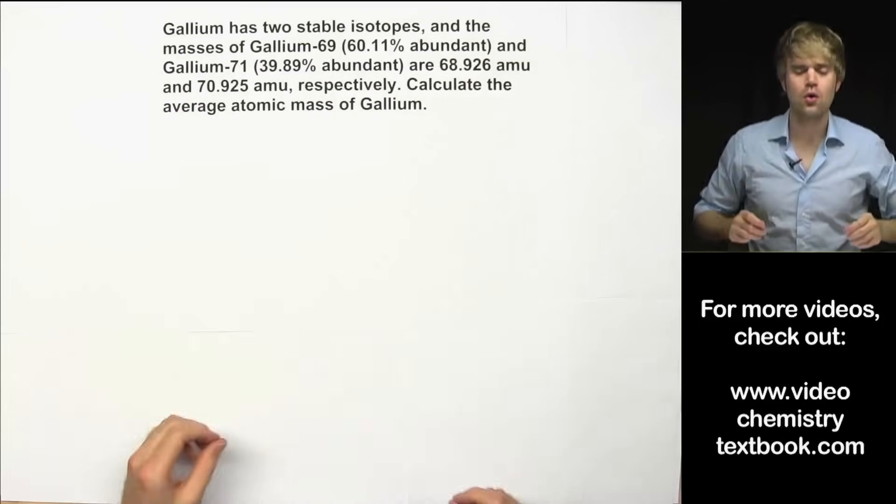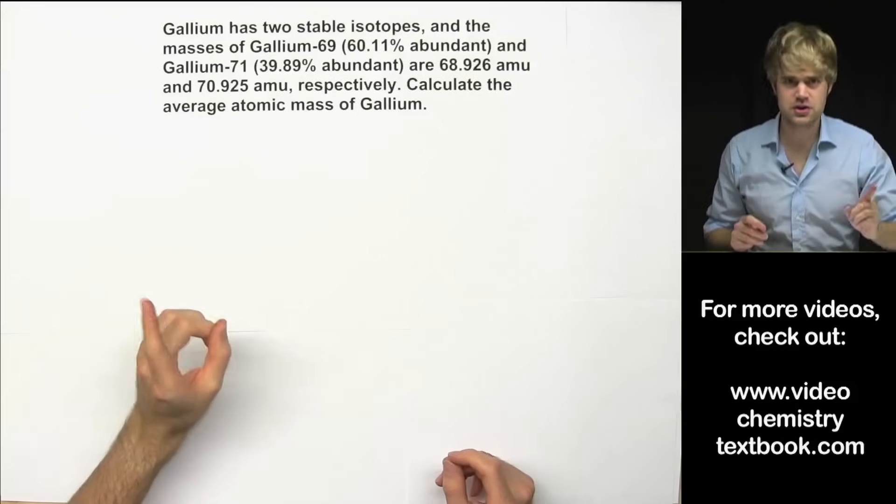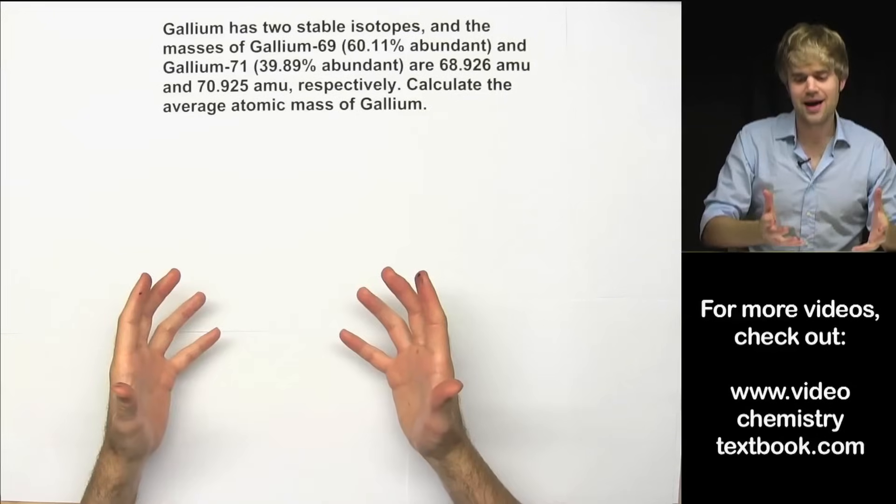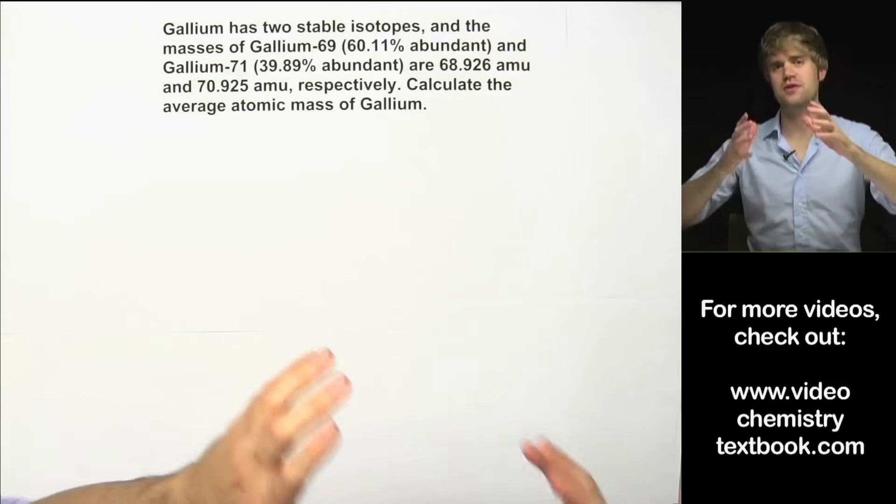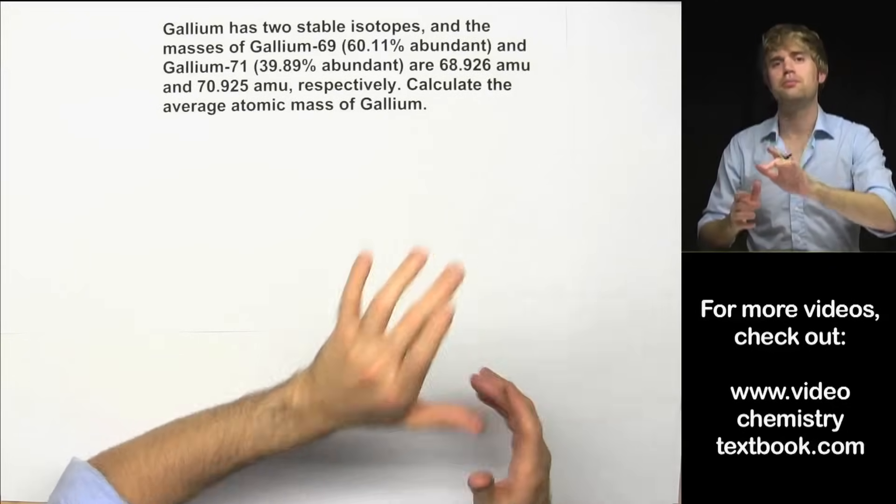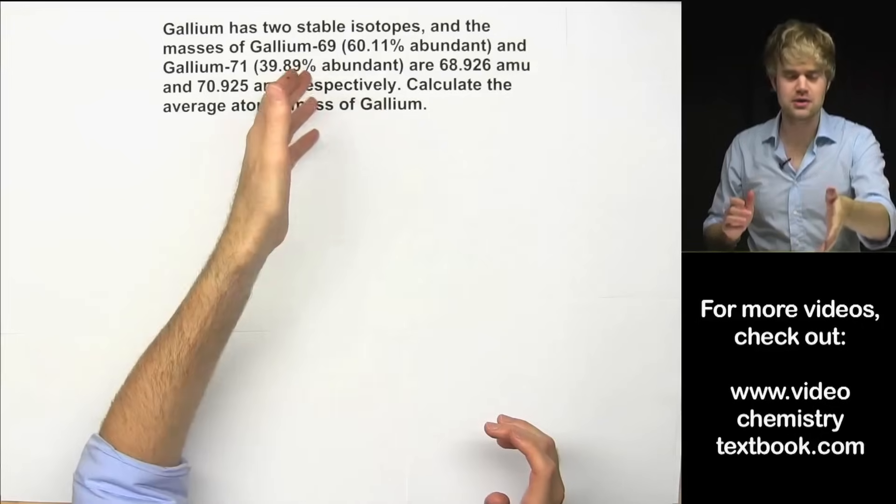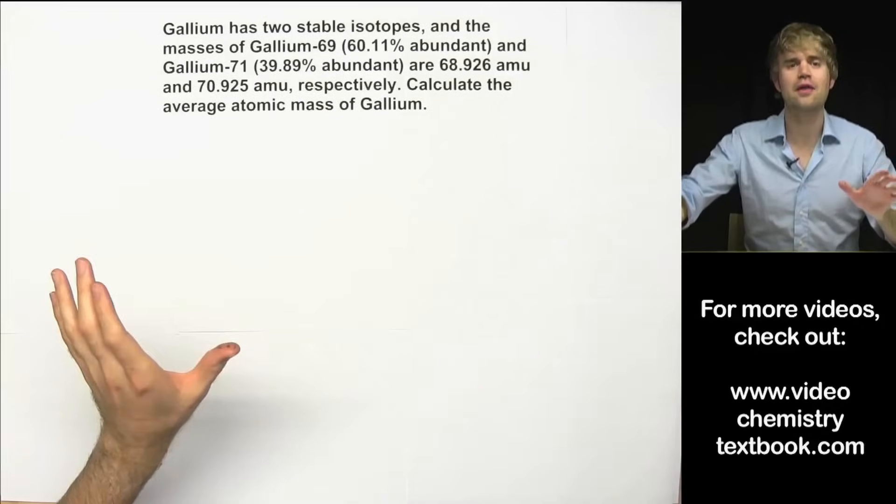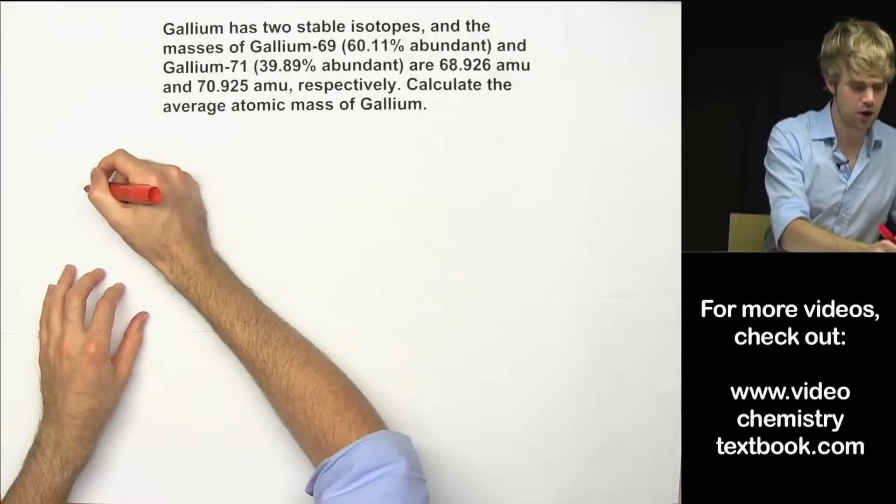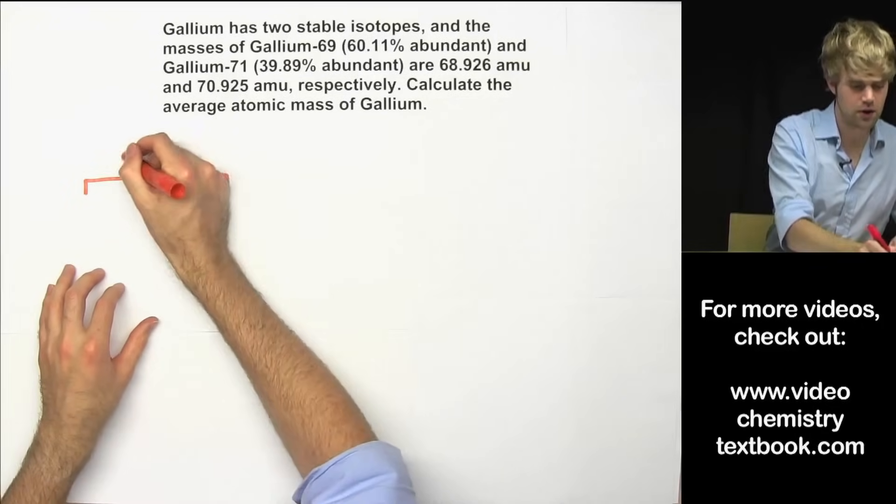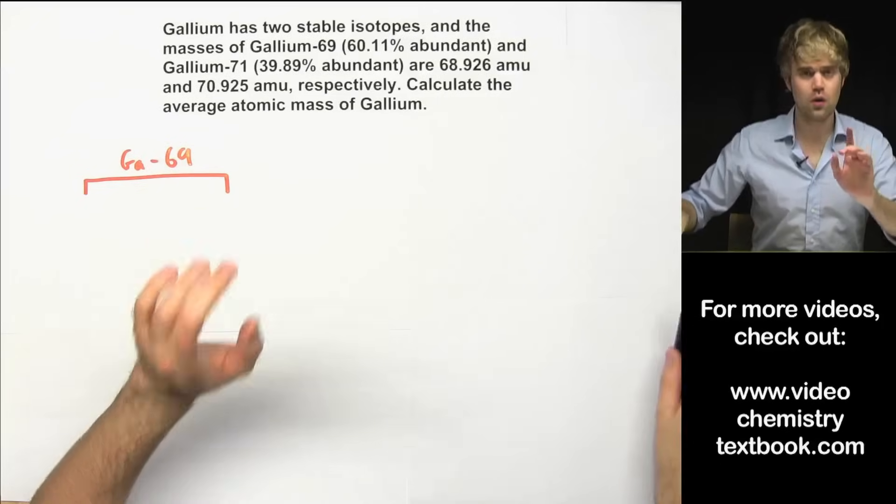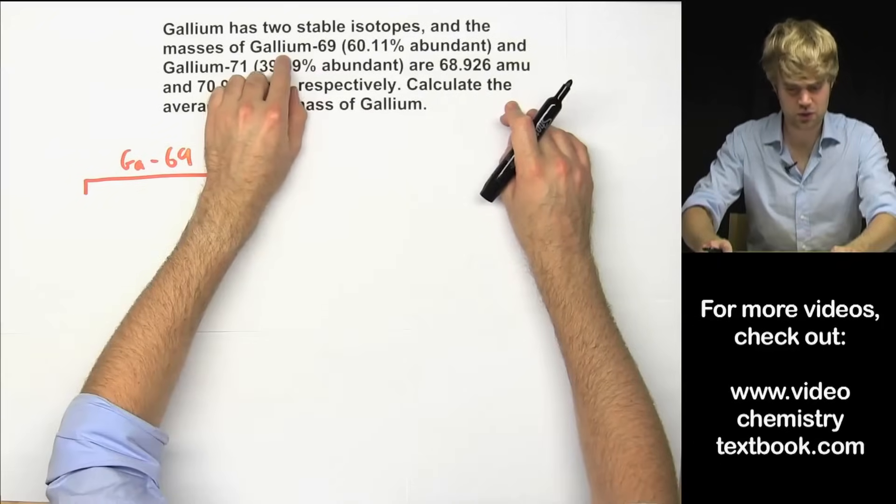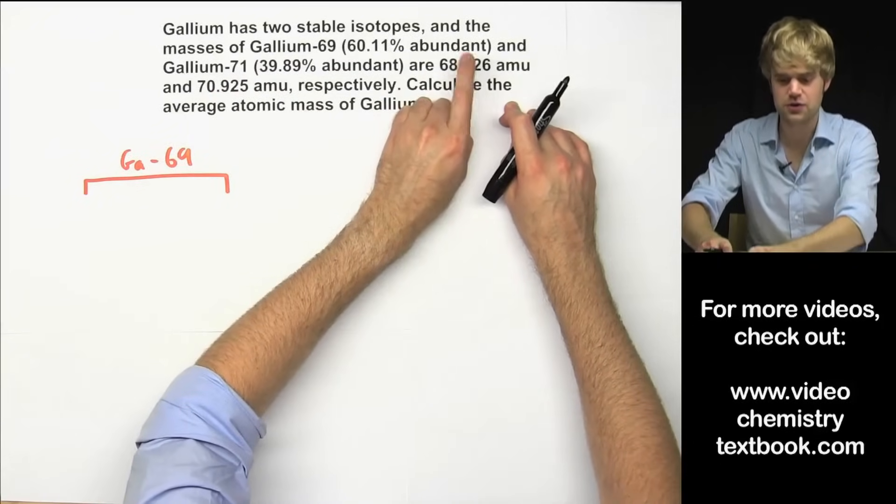So to do this, we're going to want to take the mass of the first isotope, multiply it by its percentage expressed as a decimal and then we'll take the mass of the second isotope, multiply it by its percent abundance expressed as a decimal and we'll add the two of them together. So we will start with gallium-69. So what's its mass? It's the first one here so respectively we're going to use the first mass.